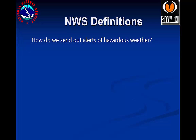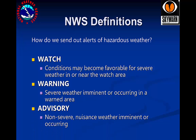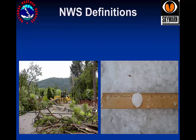How do we send out alerts of hazardous weather? There are watches, warnings, and advisories. For a watch, conditions are favorable for severe weather in or near the watch area — there is the potential for hazardous weather, and this is issued ahead of an event. With a warning, severe weather is imminent or occurring in the warned area. For an advisory, non-severe nuisance weather is imminent or occurring. This is a lower-level alert than the warning, but hazardous conditions are possible if proper safety measures aren't taken.